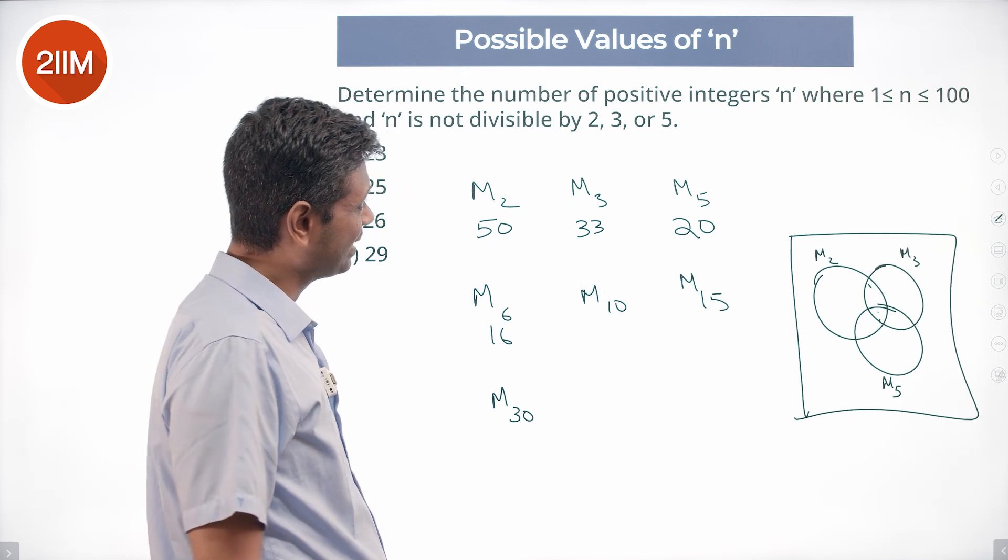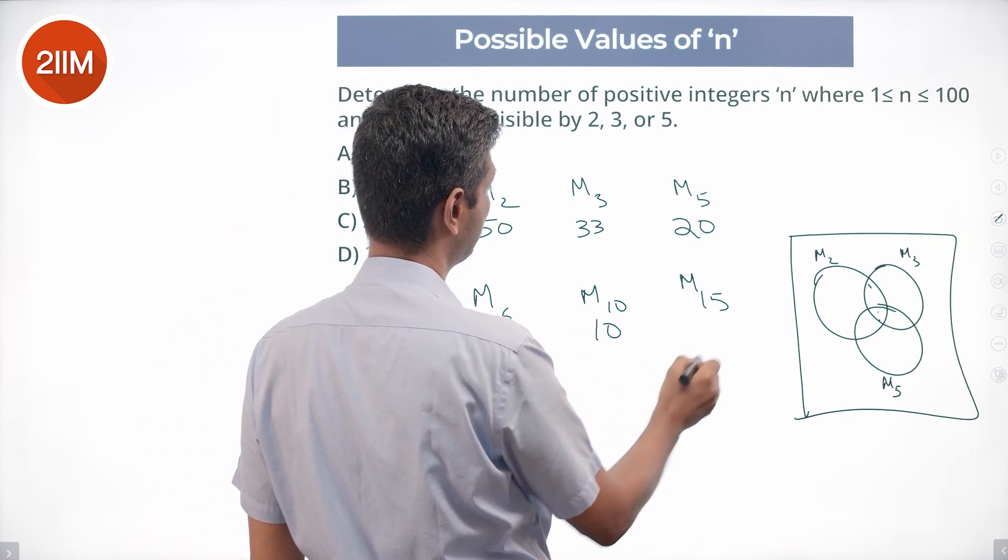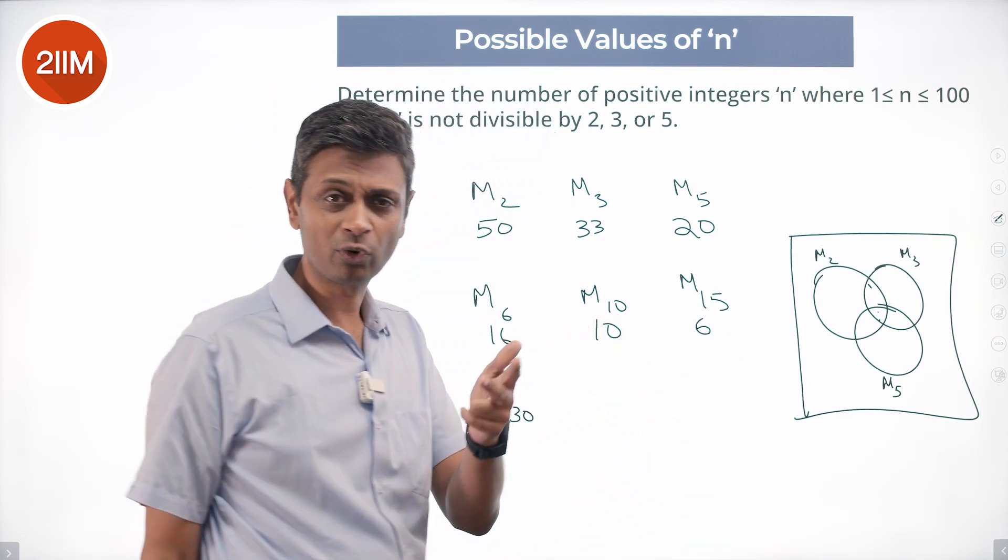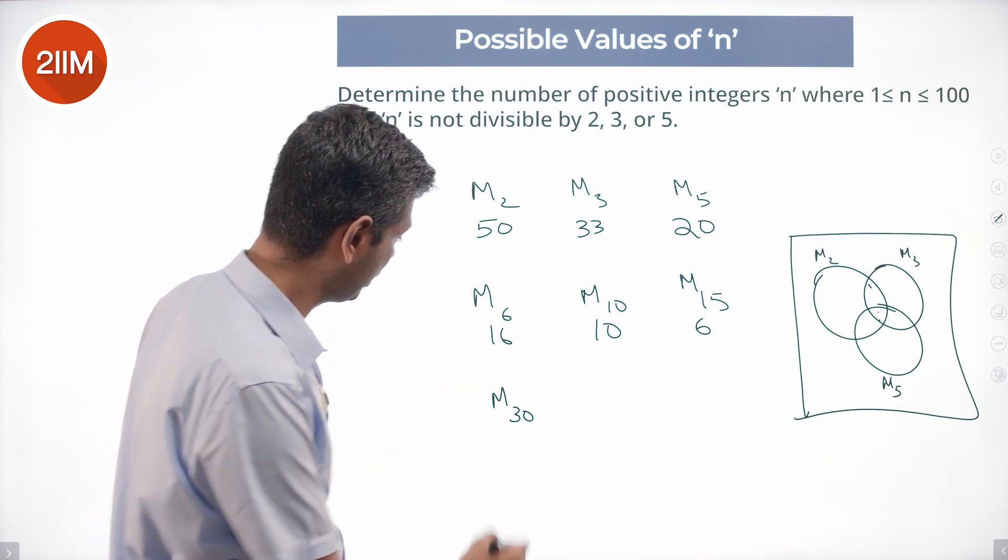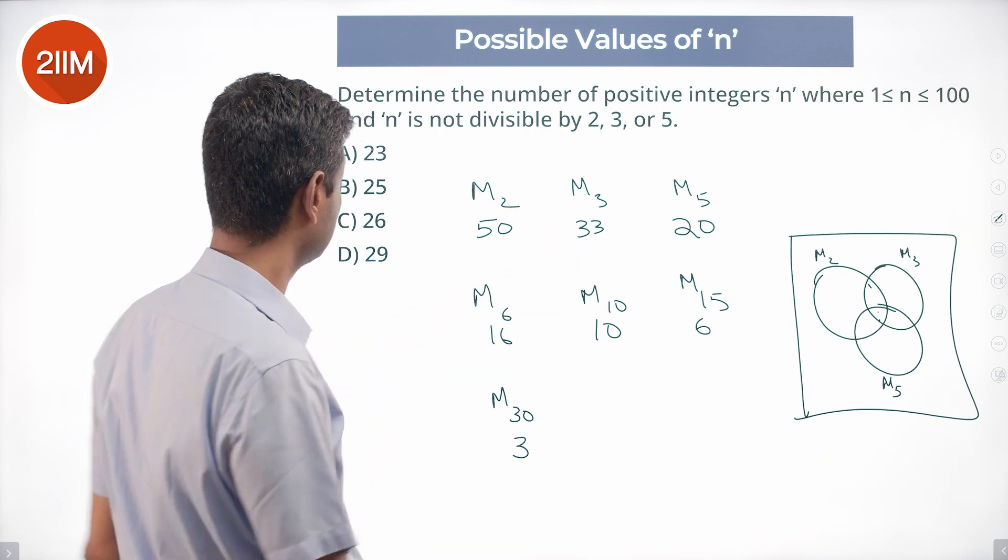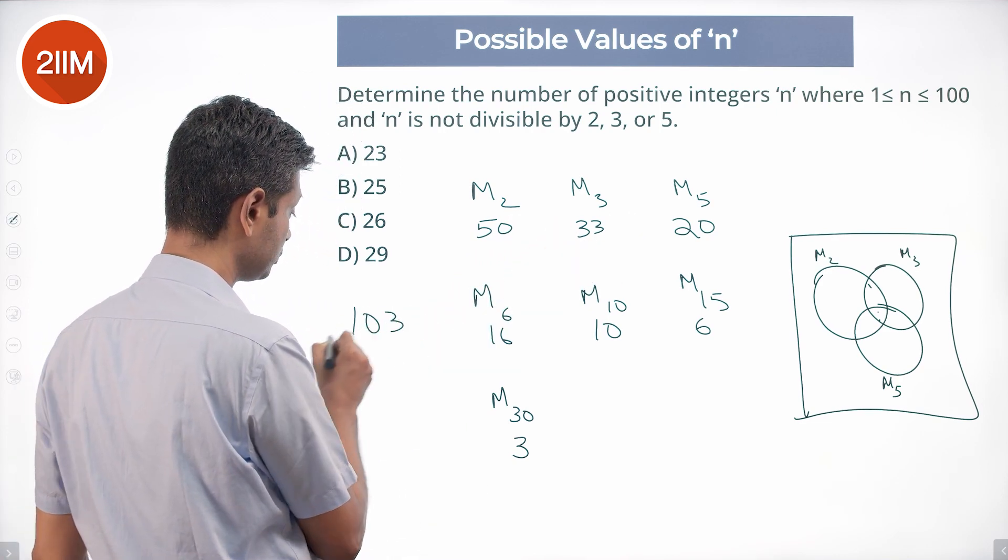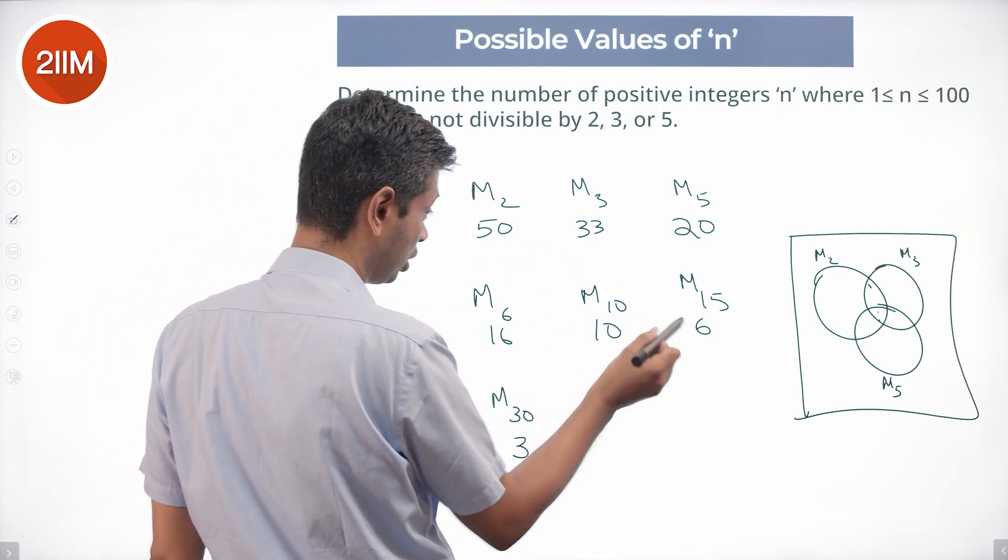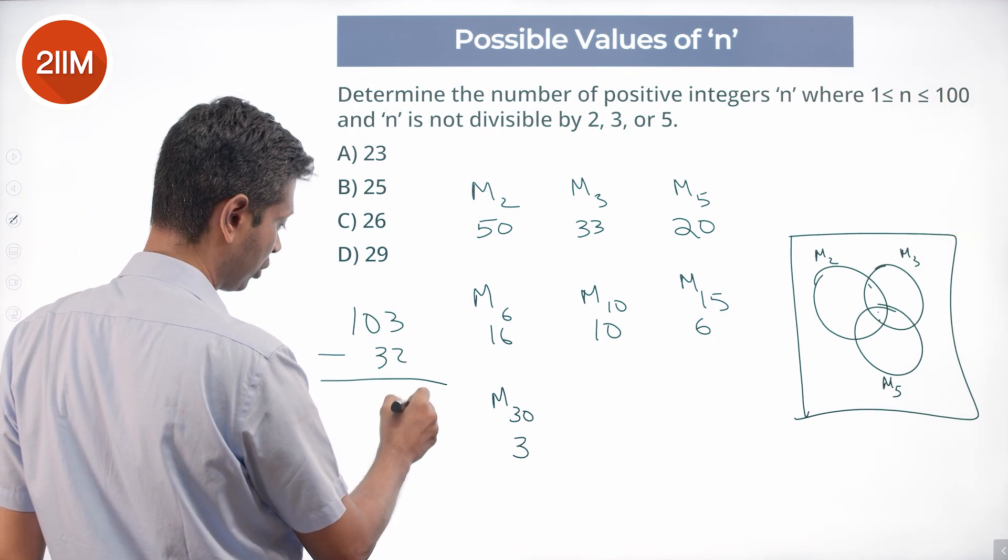Multiples of 5: 5, 10, 15 till 100, that's 20. Multiples of 6: 6, 12, 18 till 96, 16 of them. Multiples of 10: 10 of them. Multiples of 15: 15, 30, 45, all the way, 6 of them.